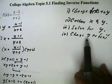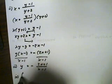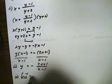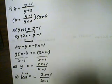Finally, step four, change y to the inverse function. So the inverse function shall be negative 2x plus one all over x minus one.